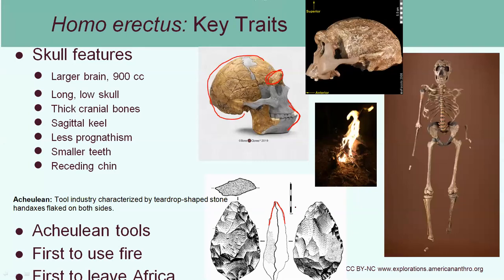This is an important point because once our ancestors started cooking their meat and food, it meant it wasn't as difficult to grind down what they were chewing. That's one of the reasons we see a decrease in tooth size — because we're no longer relying just on our teeth to grind material, whether plant or meat, but instead cooking softens it up. Another really important piece of information is that Homo erectus is going to be the first member of genus Homo to leave Africa. All other predecessors are only found on the continent of Africa, while Homo erectus is found in a much larger range.